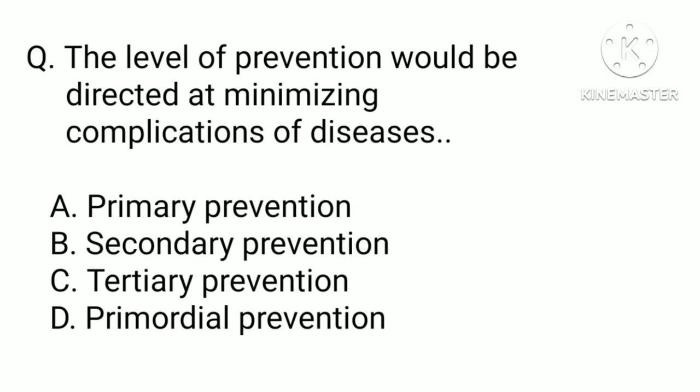The level of prevention directed at minimizing complications of diseases is known as: a) primary prevention, b) secondary prevention, c) tertiary prevention, or d) primordial prevention. The correct answer is c) tertiary prevention. All measures available to reduce impairment and disabilities are called tertiary prevention. Parkinson's disease, multiple sclerosis, and cancer are conditions requiring tertiary prevention, and rehabilitation is an essential part of it.